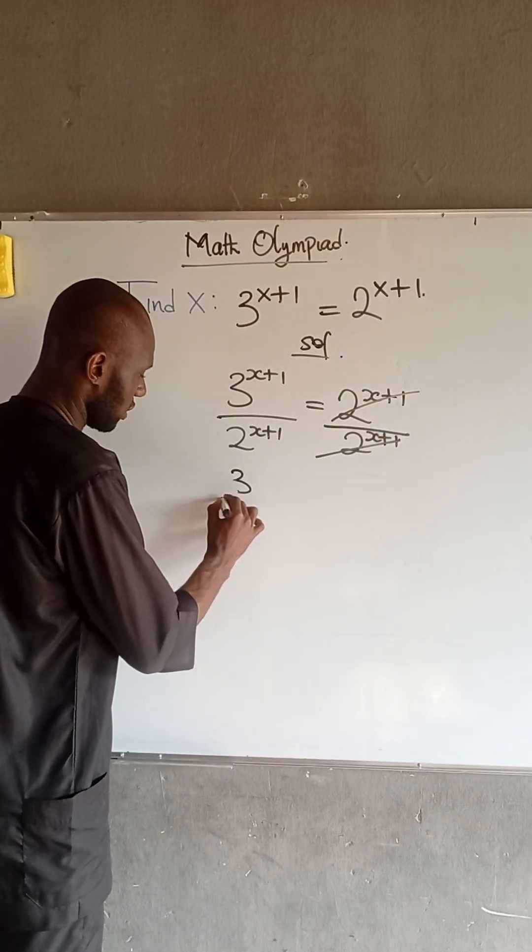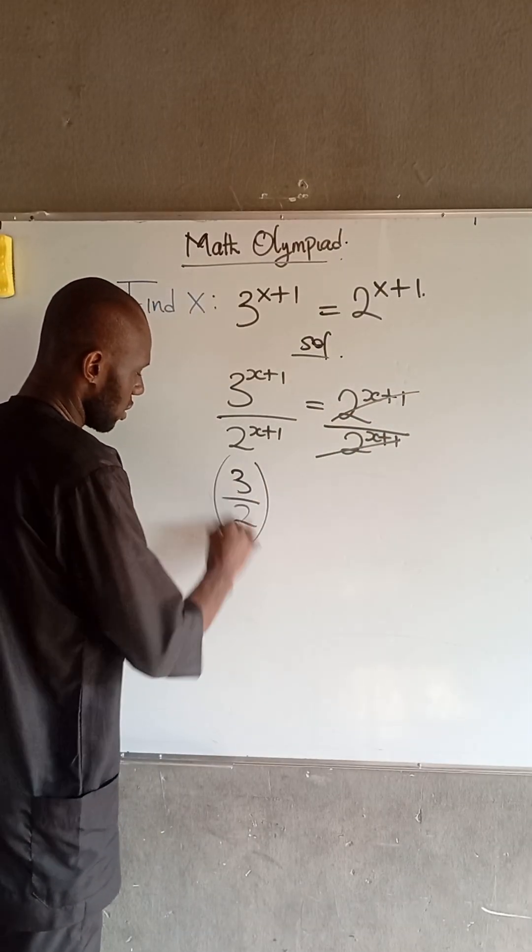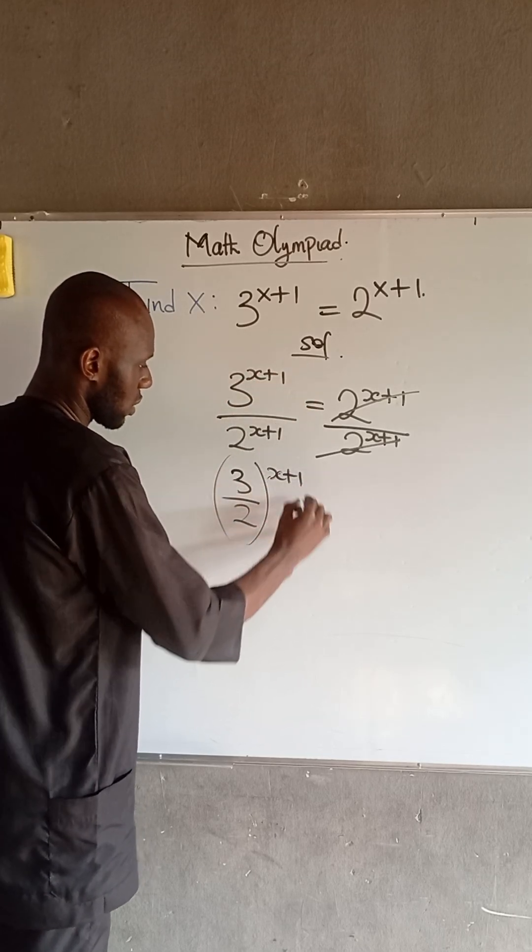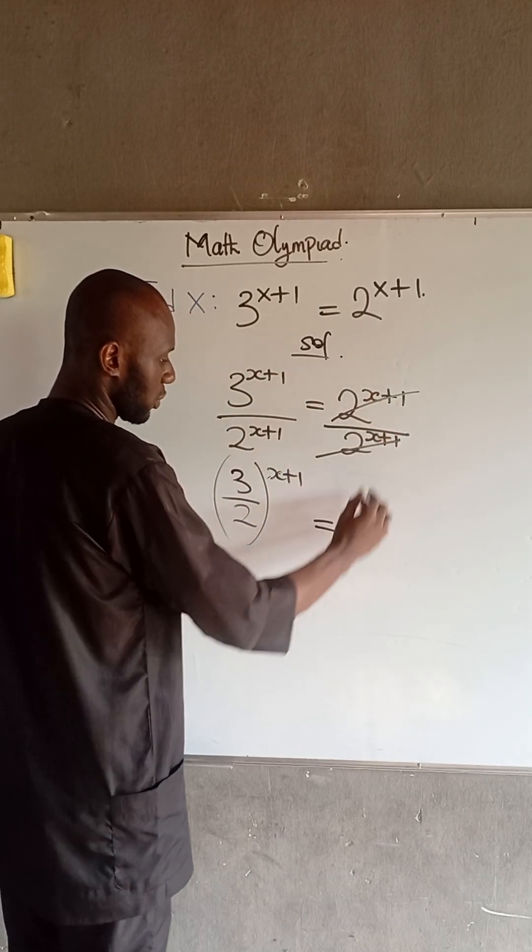So we have that this is 3 divided by 2, and since we have the same exponent, this is x plus 1 equal to, at this point, we have 1.